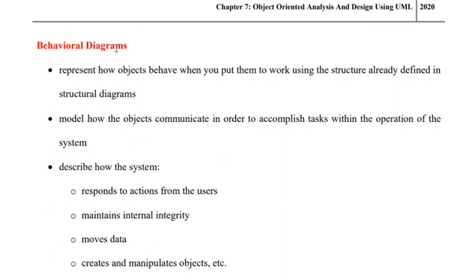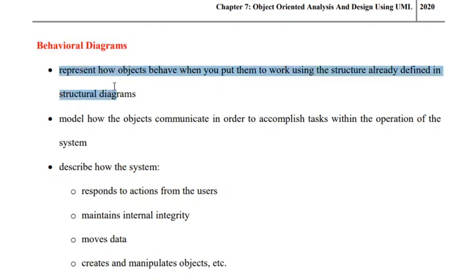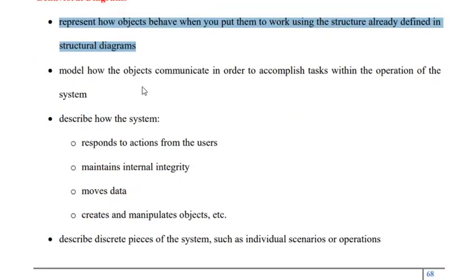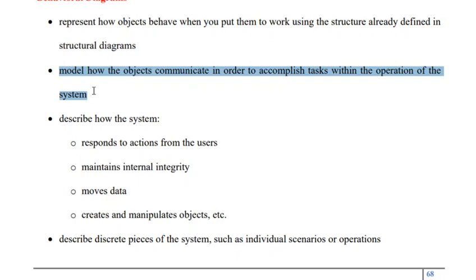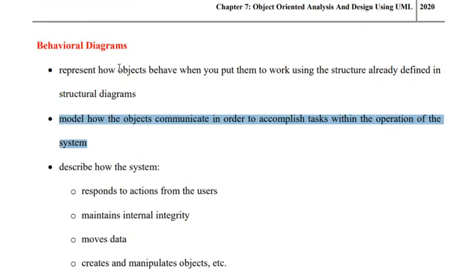Now let us move on to behavioral diagrams. A behavioral diagram is a diagram that represents how objects behave whenever they are put to work, given a suitable structure to the system. It represents the way how objects behave when put to work using the structure already defined in the structural diagram — for example, the class diagram. In the class diagram, we have already defined how classes are related to each other. Behavioral diagrams model how objects communicate with each other in order to attain a desired objective or accomplish a given task.